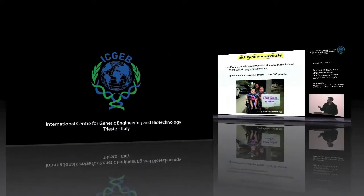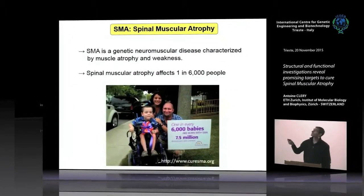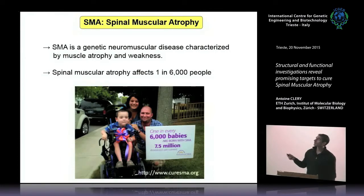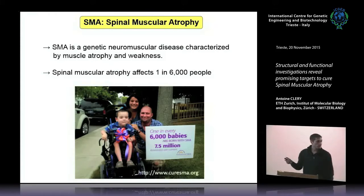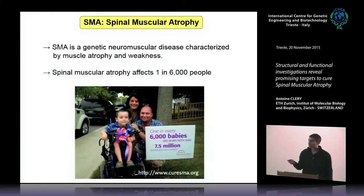I will start by talking about spinal muscular atrophy, or SMA. This is a genetic neuromuscular disease characterized by muscle atrophy and weakness. It affects 1 in 6,000 people, so it's still considered a rare disease, and unfortunately we still don't have any treatment for these kids.